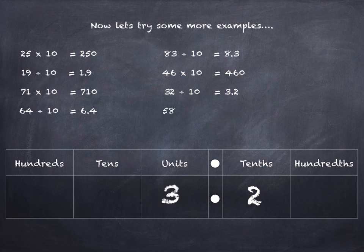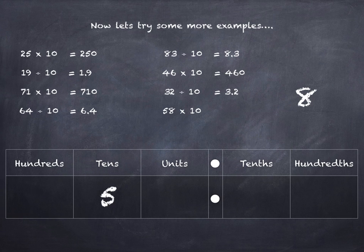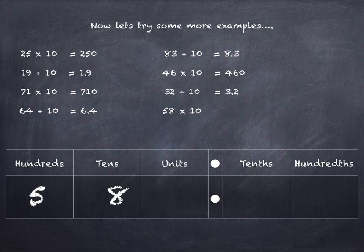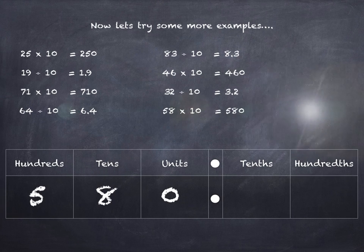And the last one — 58 times 10. 58 into the tens and units column. One place each to the left. 58 times 10 is 580.